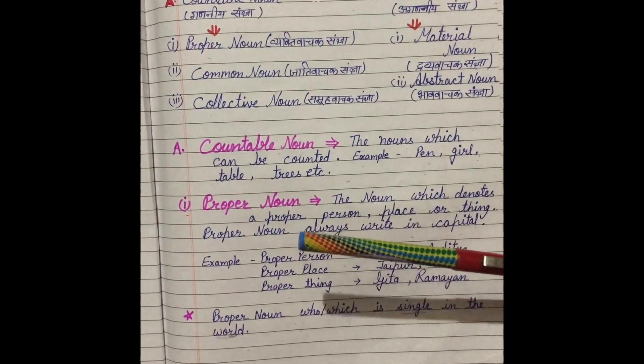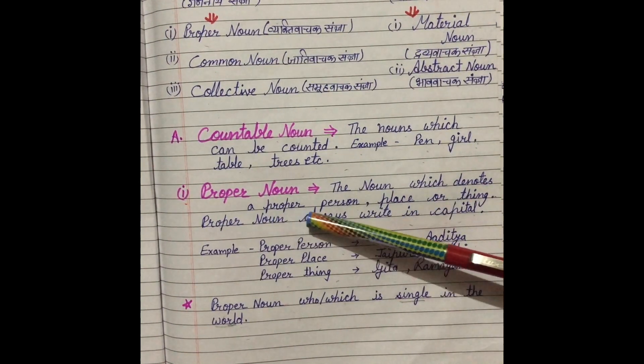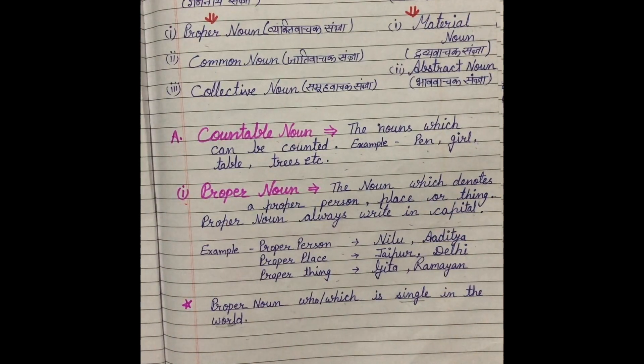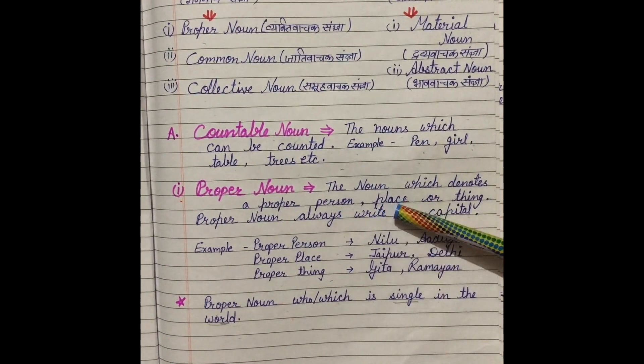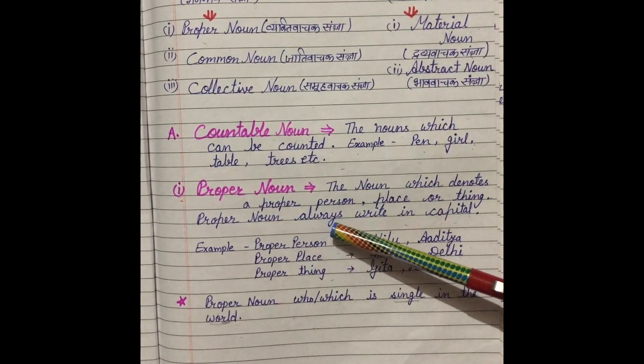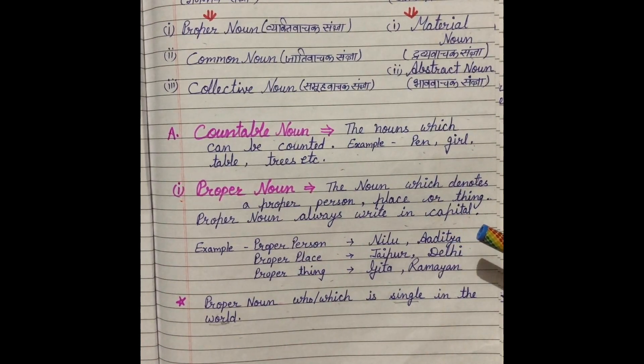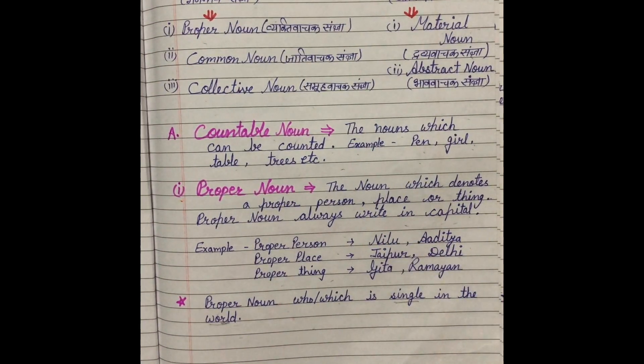As we know proper noun, the noun which denotes a proper person, place or thing. Jo proper noun hoti hai, woh kisi proper person ko, particular person ko, particular place ko, ya thing ko denote karti hai. Proper noun always written in capital. Jo proper nouns hoti hai, woh apne aap mein single hoti hai, ek hi hoti hai.